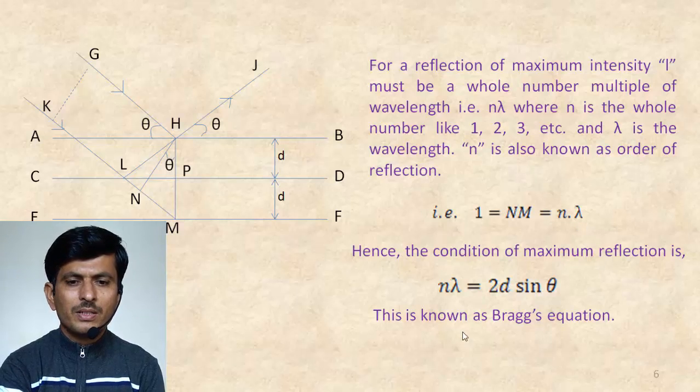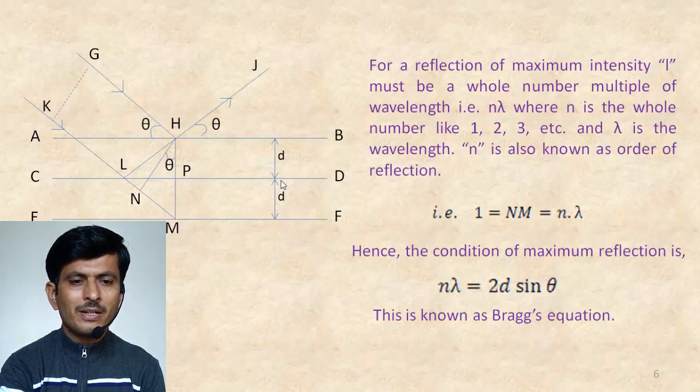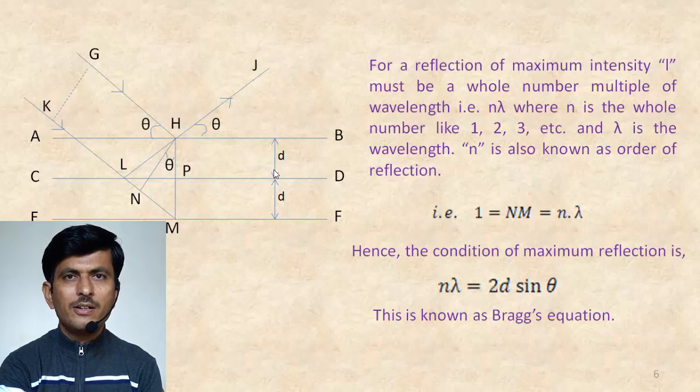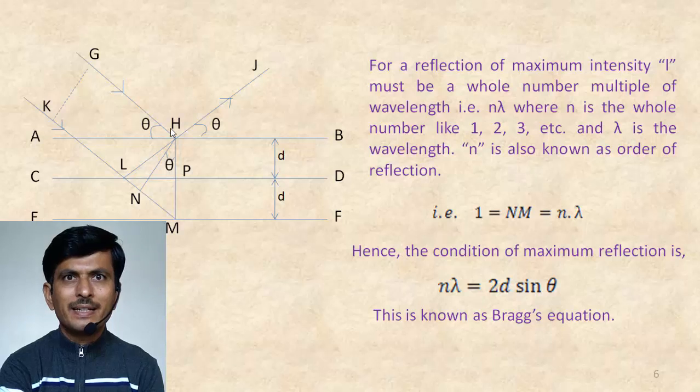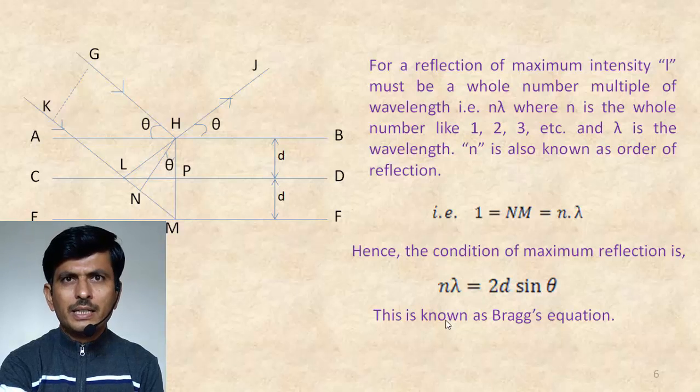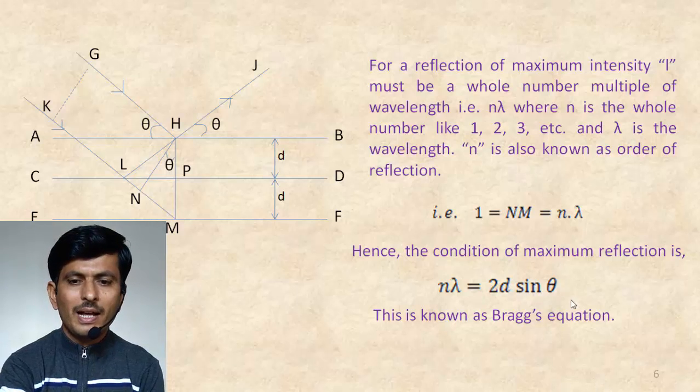Now, in this Bragg's equation, this lambda represents wavelength of X-rays used, and this is constant. Again, this D represents interplanar distance. And for a given set of crystal, the interplanar distance D becomes constant. But this theta represents glancing angle. That means at which angle these X-rays incident on the plane. So the condition under which maximum reflection intensity will depend only on the glancing angle theta. This is about deriving Bragg's equation. Thank you.